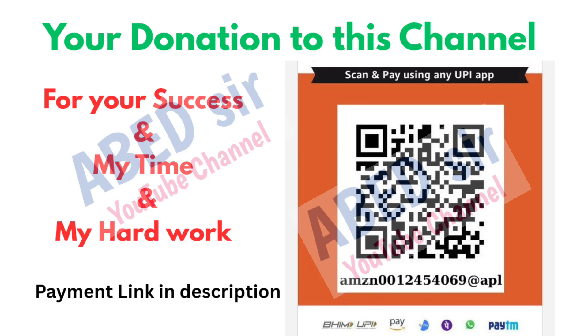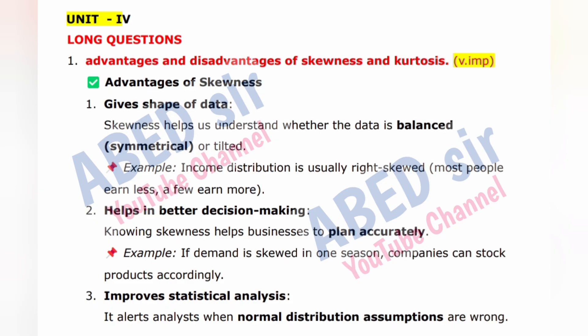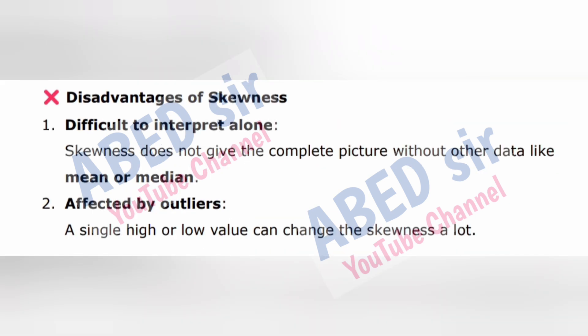Next, Unit 4 Long Questions. First important long question: Advantages and disadvantages of skewness and kurtosis. Advantages of skewness: 1. Gives shape of data — skewness helps us understand whether the data is balanced, symmetrical, or tilted. Example: income distribution is usually right skewed — most people earn less, a few earn more. 2. Helps in better decision making — knowing skewness helps businesses to plan accurately. Example: if demand is skewed in one season, companies can stock products accordingly. 3. Improves statistical analysis — it alerts analysts when normal distribution assumptions are wrong.